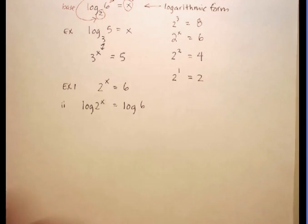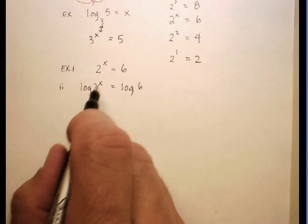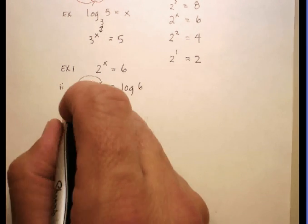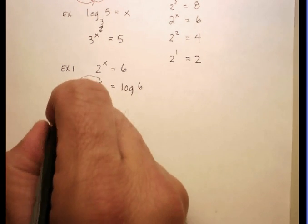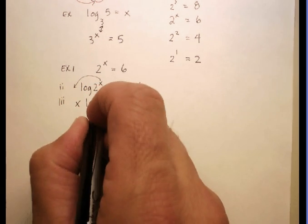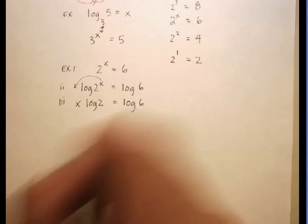Second step, okay? Now, there's a rule that says if I have the x up here in the denominator, I can actually bring it down into the front of the log. So it's like saying x log 2 is equal to log 6.